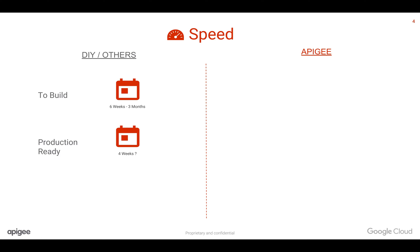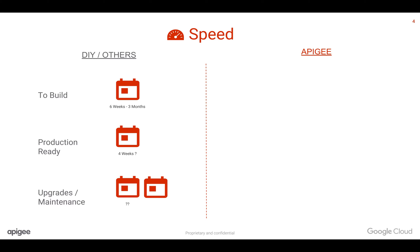To make it production ready, that's probably another four weeks. And then if you want to upgrade and maintain all the implementation you've done, it will take longer than you expected. Because in general, to build software is easy, but to maintain software takes a lot of energy and time.